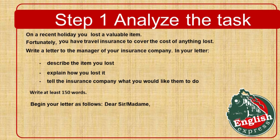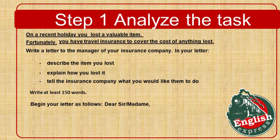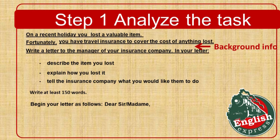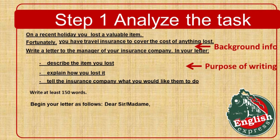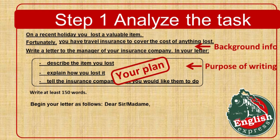The first step you need to take is analyze the task. It's recommended to underline all the key points. On a recent holiday, you lost a valuable item, but you have travel insurance to cover the cost of anything lost – this is the background information. Now, what does the task require us to do? Write a letter to the manager of your insurance company. In your letter, you need to describe the item you lost, explain how you lost it, and tell the insurance company what you would like them to do. This is your purpose of writing and your plan. We know that the word count should be at least 150 words. Begin your letter as follows: Dear Sir or Madam – this is your recommended title.